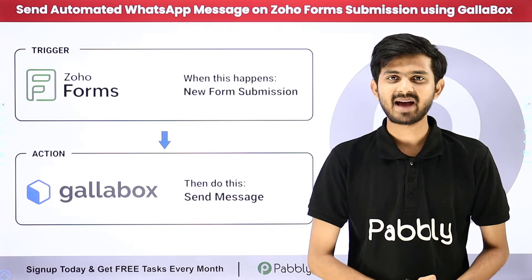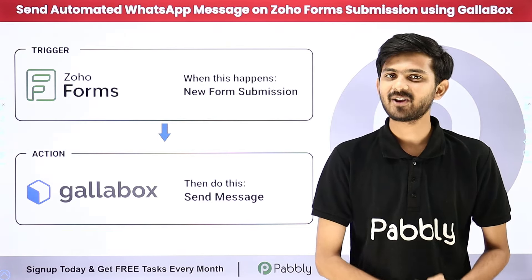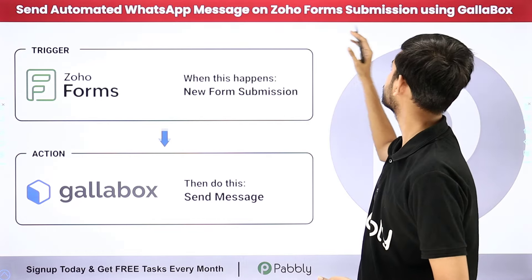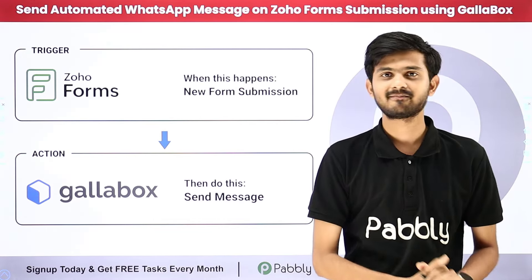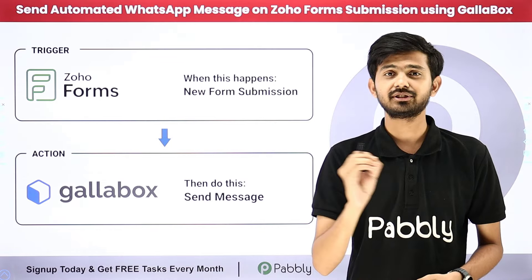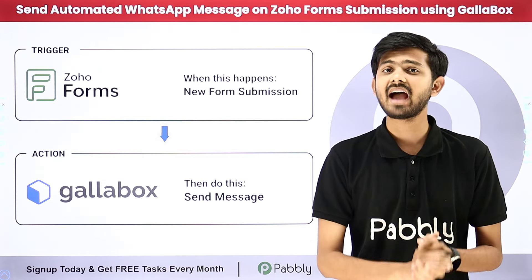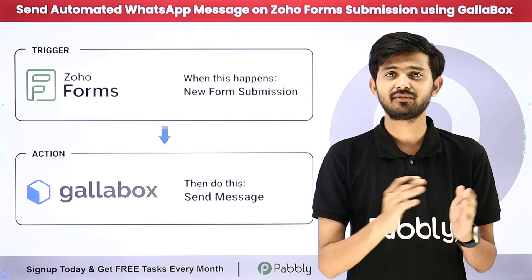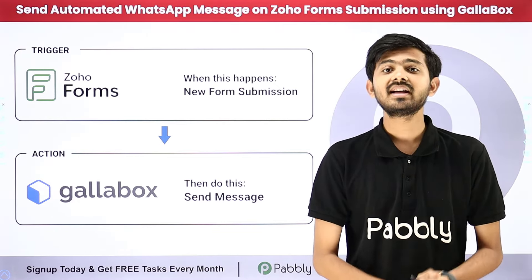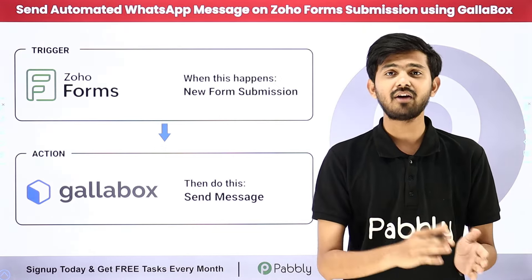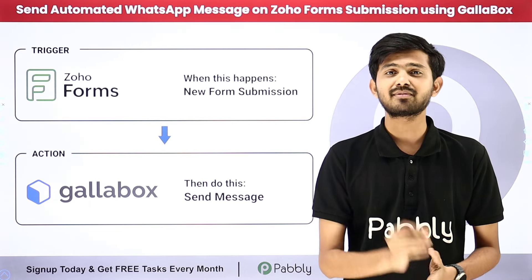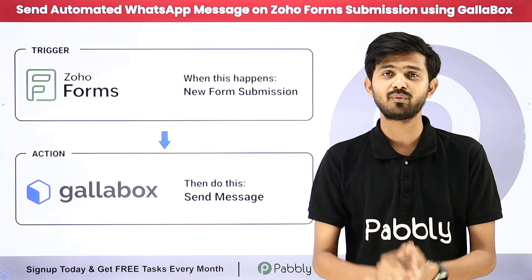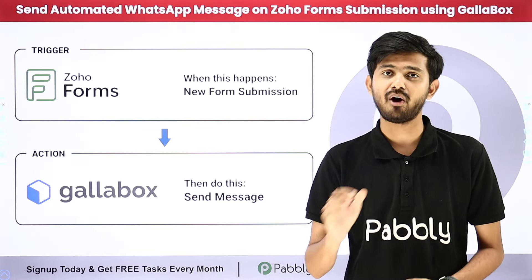Hello everyone, welcome back to Pabbly. Today our topic is how to send automated WhatsApp messages on Zoho Forms submission using Gallup Box. I have created a registration form using Zoho Forms and added it to my website. When I receive a new registration from a user, I will capture the form submission details and use them to automatically send a WhatsApp message using Gallup Box.